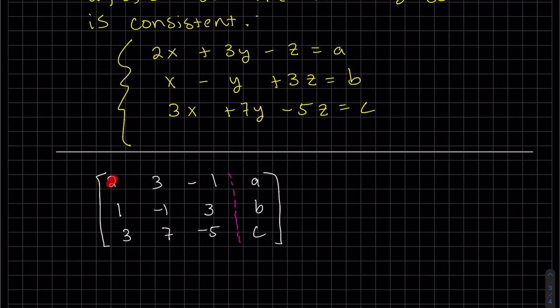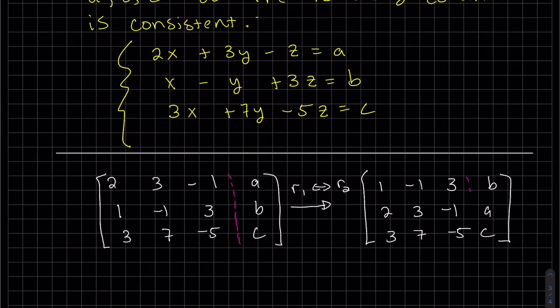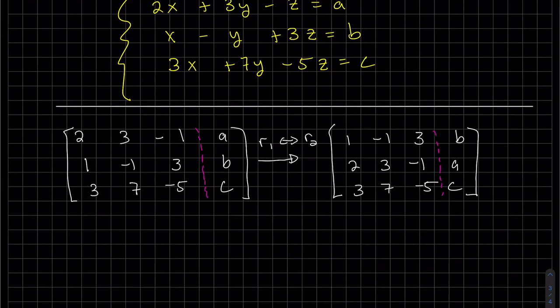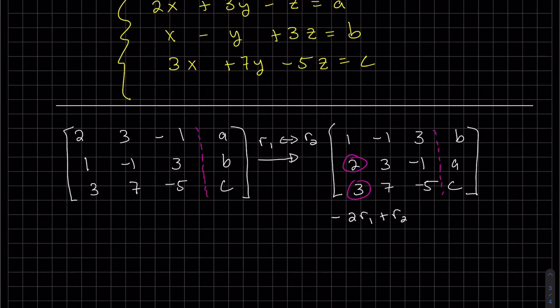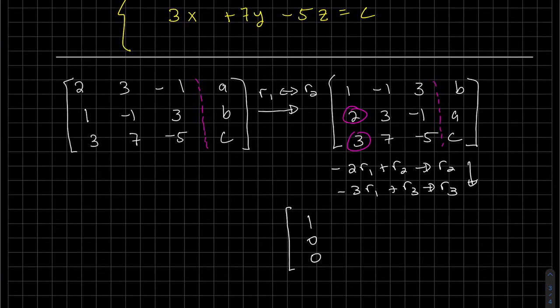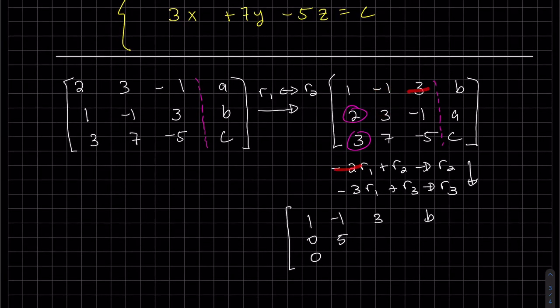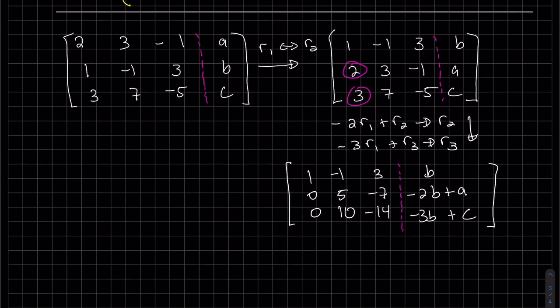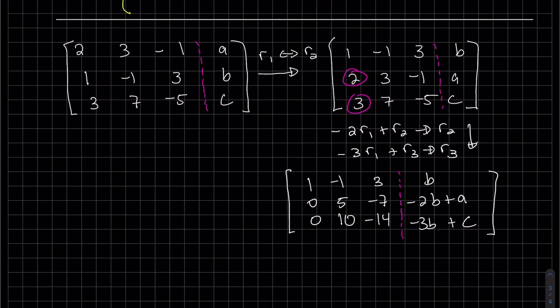So I want my one up here, so I'm just going to flop these two. Now that I have that there, I'm going to zero these two out. Minus three times r1 is minus 3b, and then you add it to r3.